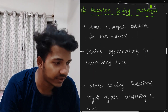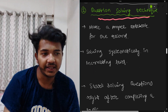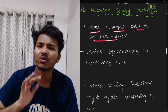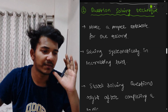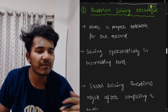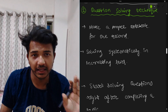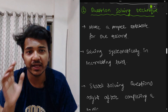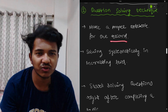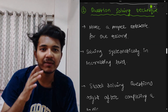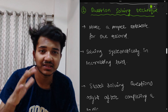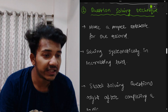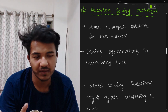Now let's talk about question solving techniques. The first point: make a proper notebook for the record. Many people solve questions on their module pages, random pages, or rough paper and think the question is done — that's wrong. Make a proper notebook for each subject separately, and solve questions in it with decent handwriting.